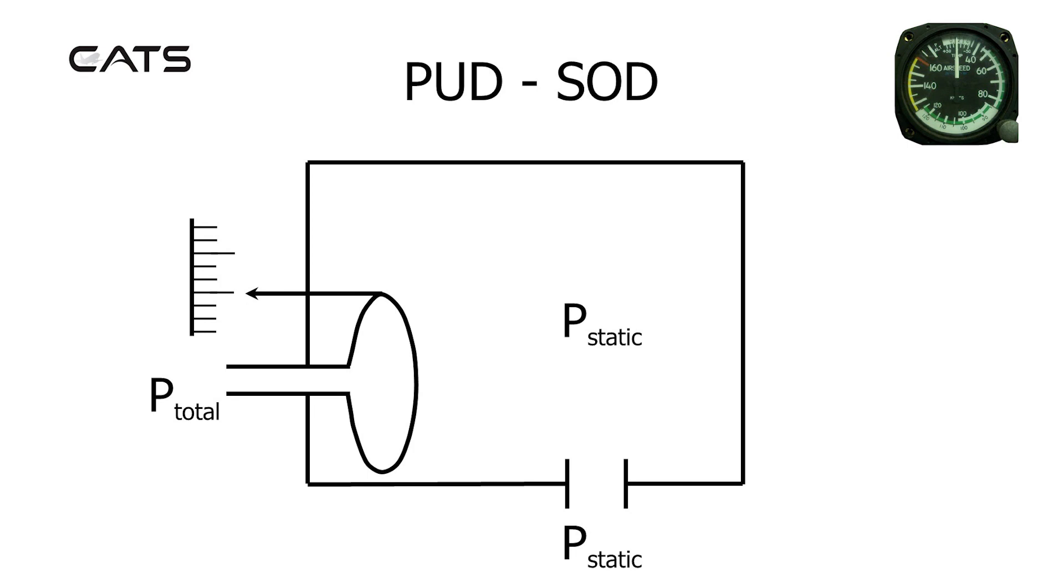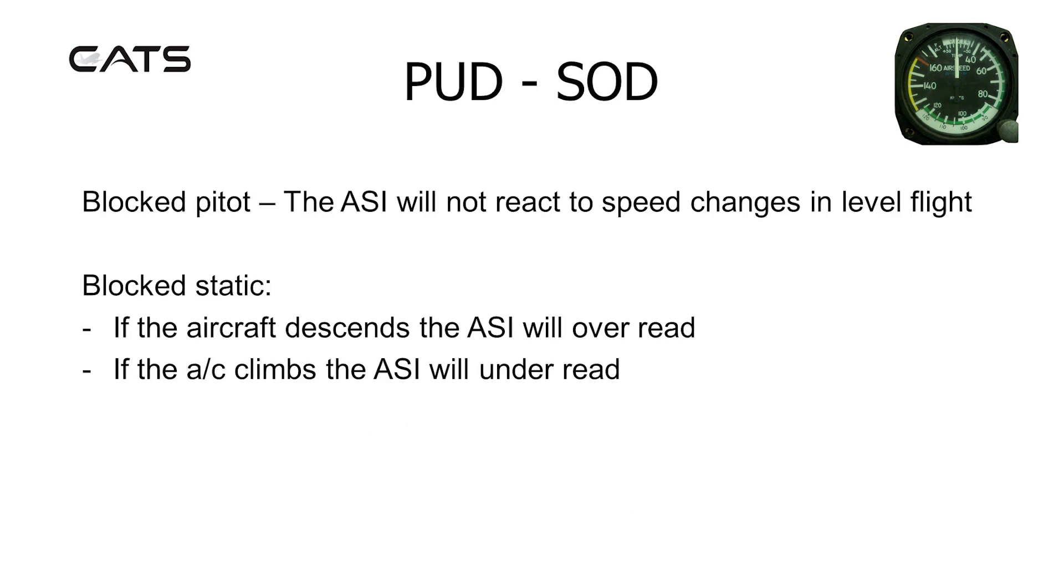The mnemonic PUDSOD can be reversed, although I don't recommend it, to come up with a term POCSUCK for climbs. It's just a lot easier really to remember PUDSOD and then if you get a climbing question, just reverse the effect in your mind. If you're level with a blocked pitot, the ASI will not react to speed changes. How can it? Static pressure is the same at that particular altitude flight level. The dynamic pressure change will not be picked up. However, as I mentioned, block static in the descent, the ASI will over-read. In the climb, the ASI will under-read.